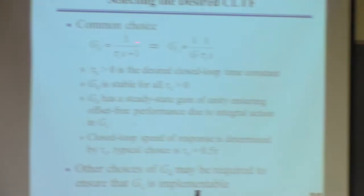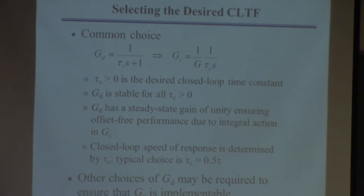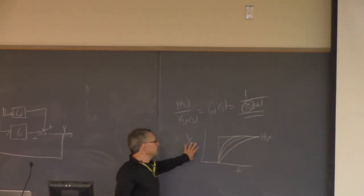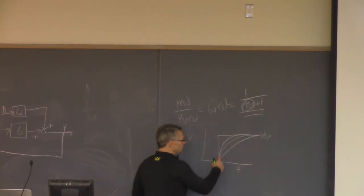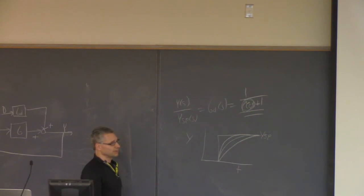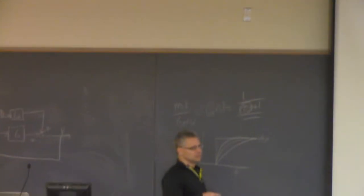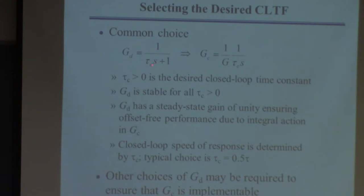Why choose first order? Because there's nothing simpler you can choose. You can't expect the closed-loop system to instantaneously go from one set point to another — the system has inertia. So you have to accept some dynamics, and what dynamics are simpler than first order? That's the simplest dynamics there are, with an adjustable time constant to get any speed we want and a gain of one to guarantee no offset.